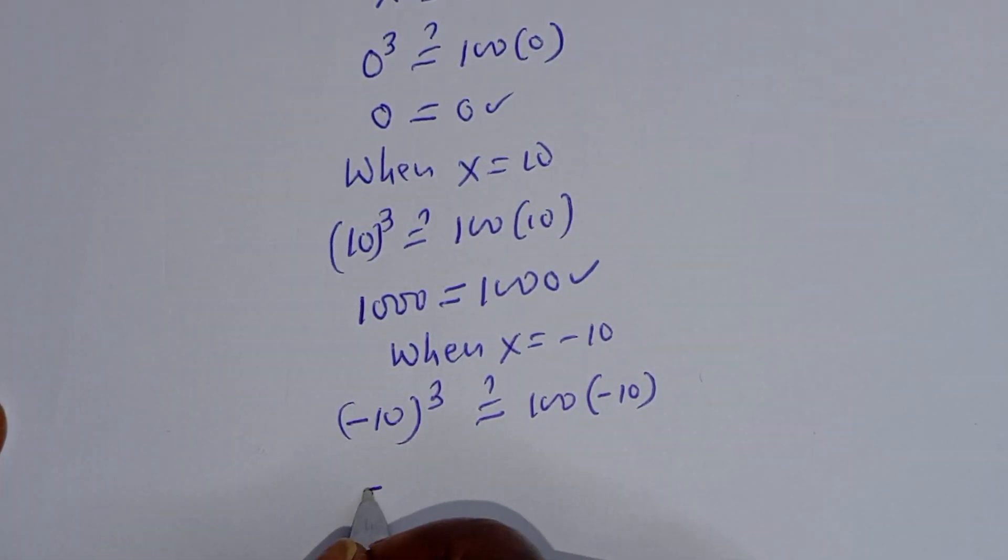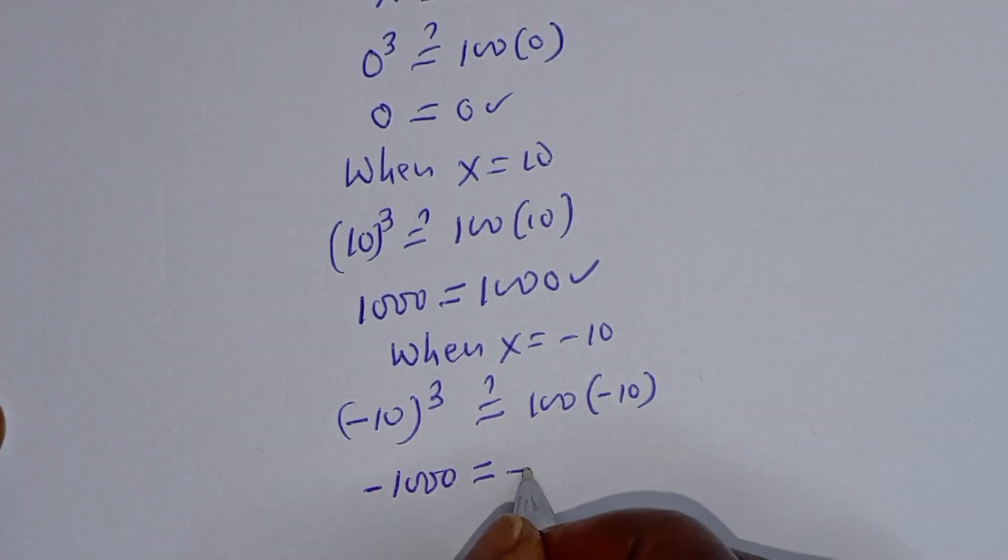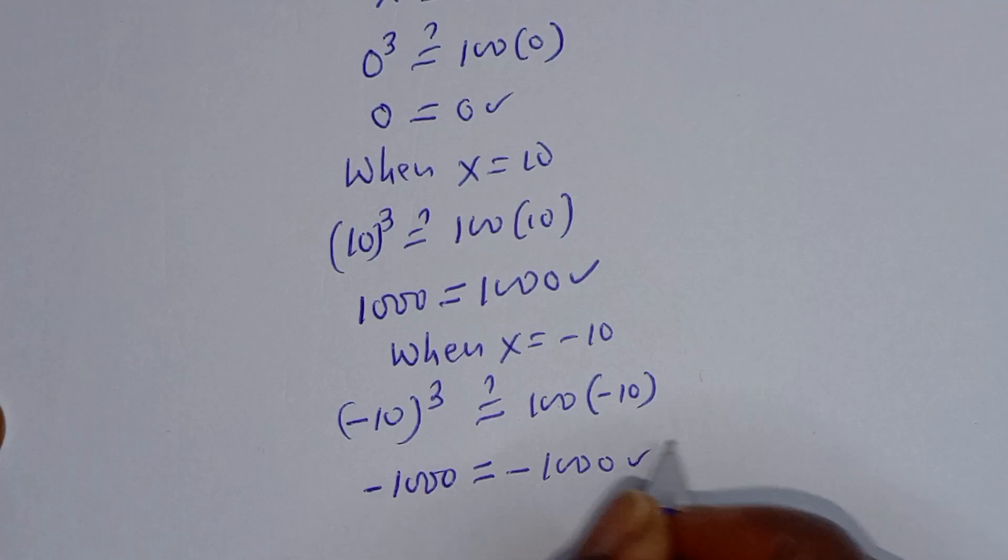The left-hand side, minus 1000 is equal to 100 times minus 10, this is minus 1000, which is also true.